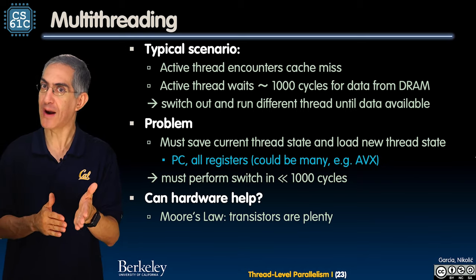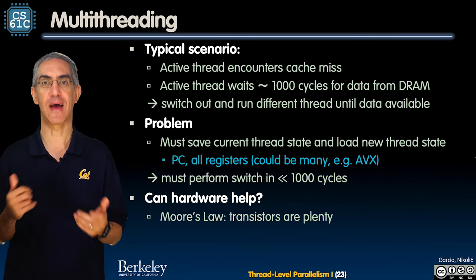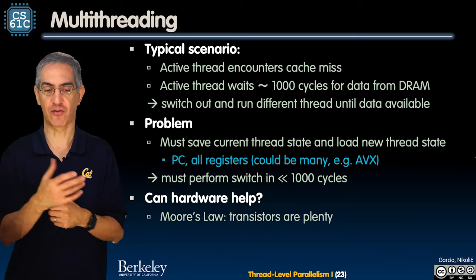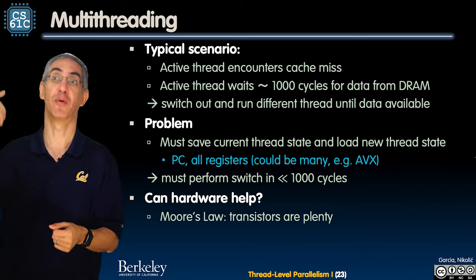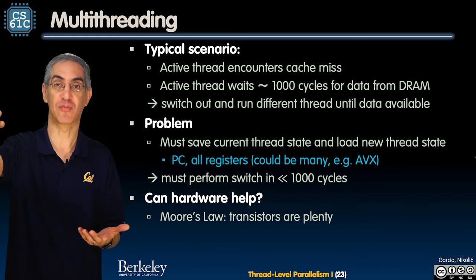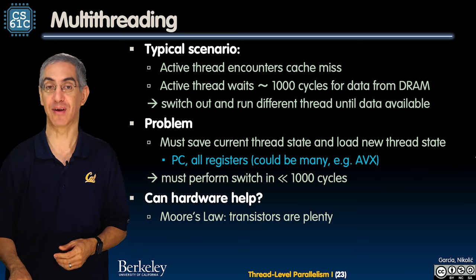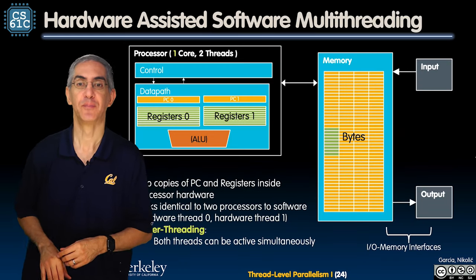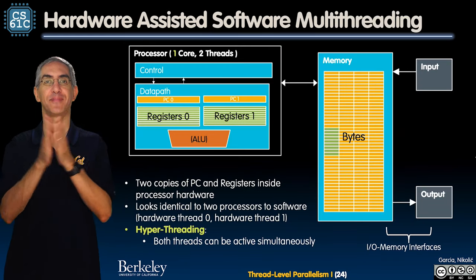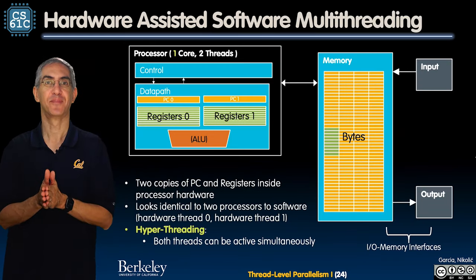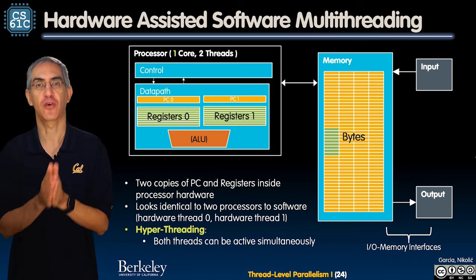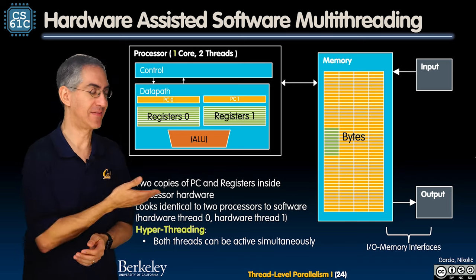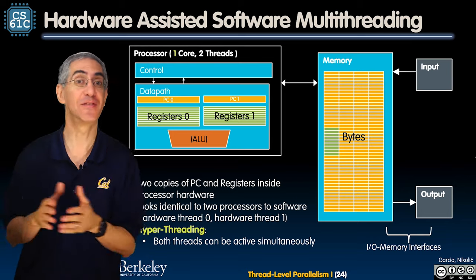Can hardware somehow help the fact that I've got to switch threads in less than a thousand cycles, when the previous memory request came in going to do a load or store? Here it is: hardware-assisted software multi-threading. That's the title here.